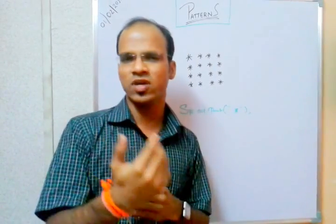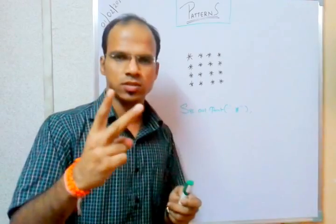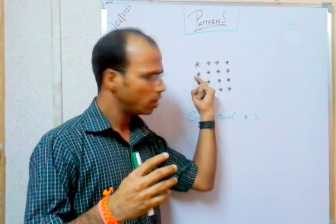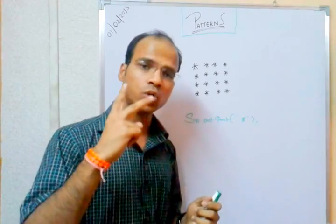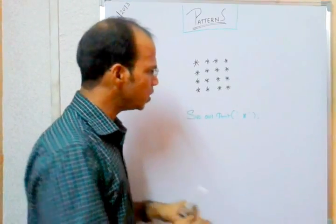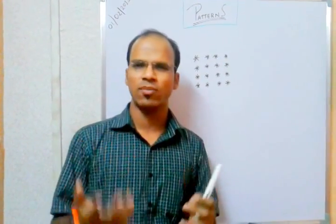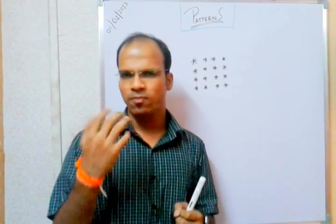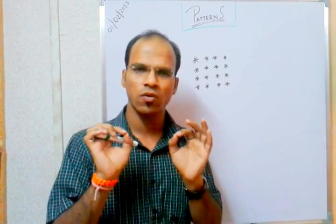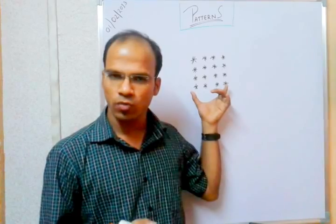We are doing two things: first, printing each star; second, coming to a new line after every four stars. We can apply loops here. You have different types of loops — while loop, for loop, do-while loop. The best loop to use when you know the number of iterations is the for loop. When you know the starting point and ending point, always go for the for loop.